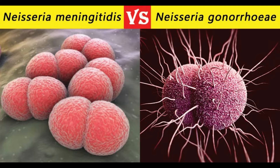10. Culture medium: selective media contain antimicrobials that inhibit the growth of organisms other than N. gonorrhoeae, typically vancomycin (inhibits gram-positive bacteria), colistin (inhibits gram-negative bacteria including commensals), trimethoprim (inhibits swarming of Proteus spp.), and nystatin or amphotericin B (antifungal agents). N. meningitidis uses blood agar, tryptic soy agar, supplemented chocolate agar, and Mueller-Hinton agar. 11. Growth rate: N. gonorrhoeae is slower than meningococcus. 12. Fastidiousness: N. gonorrhoeae is the most fastidious among Neisseria; N. meningitidis is comparatively less fastidious.